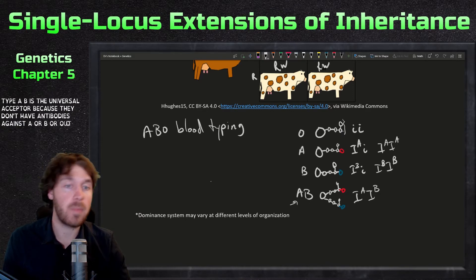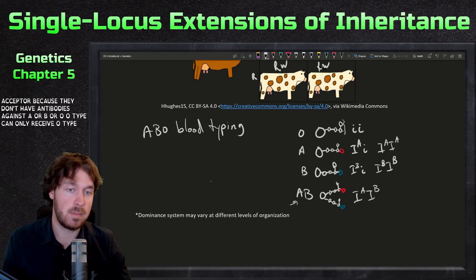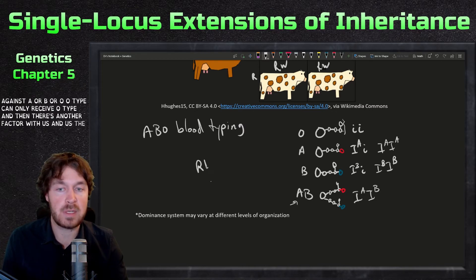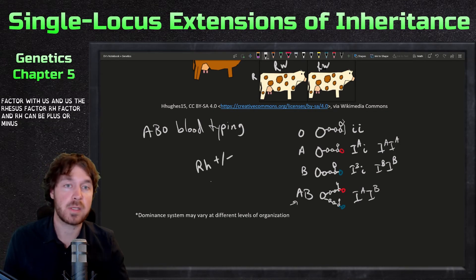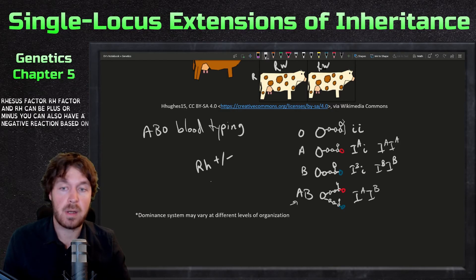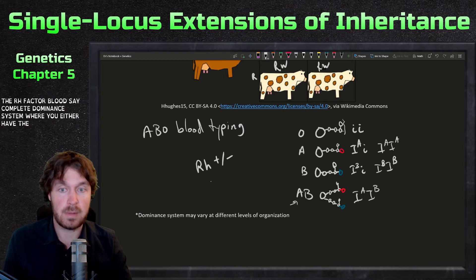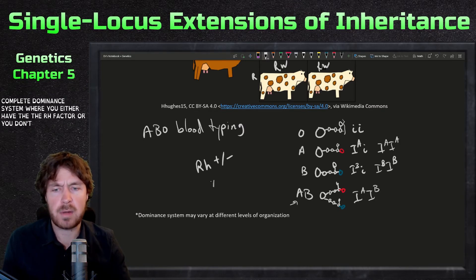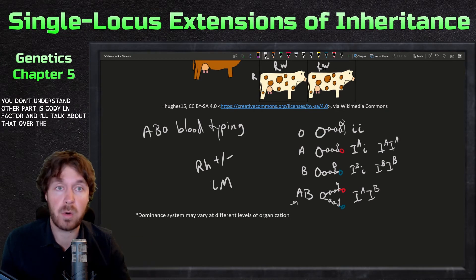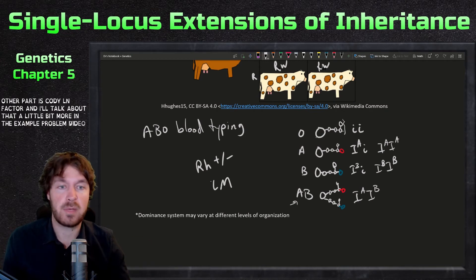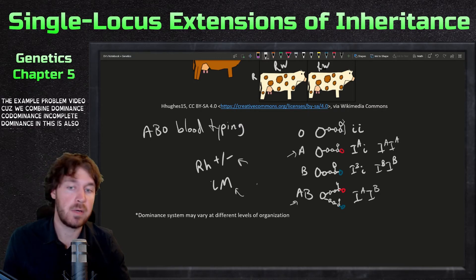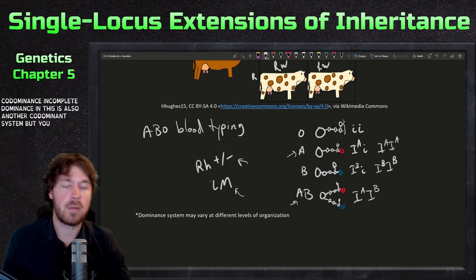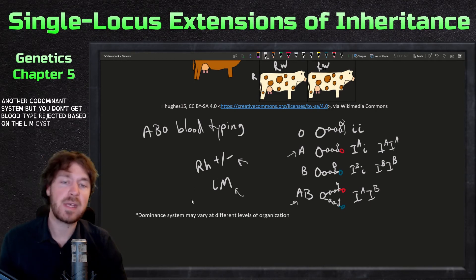Remember: O is a universal donor because A, B, and AB won't attack the O type. AB is a universal acceptor because they don't have antibodies against A, B, or O. O type can only receive O type. There's also the Rhesus factor (RH factor) — RH can be plus or minus, and that's a complete dominant system. There's also the LM factor, which is another codominant system, and I'll discuss it more in the upcoming example problem video.